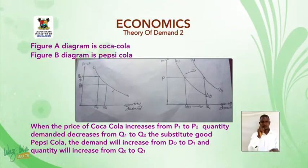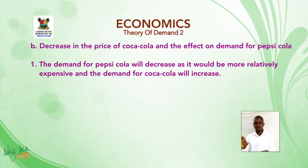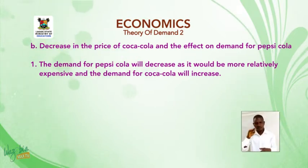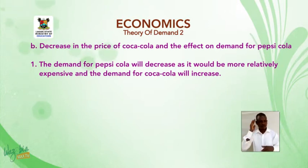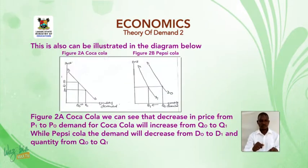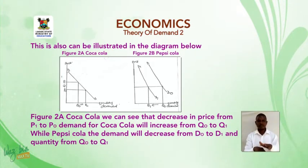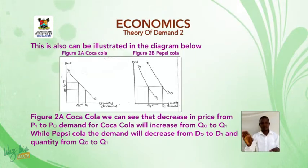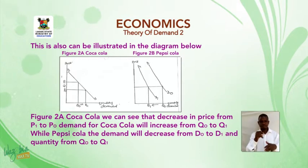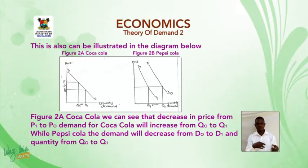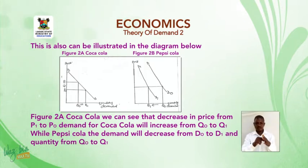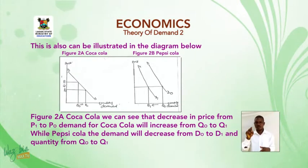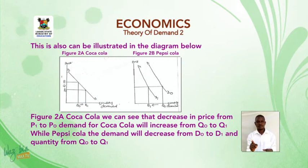Let us consider the second case: a decrease in the price of Coca-Cola and the effects on demand for Pepsi-Cola. The demand for Pepsi-Cola will decrease as it will be relatively more expensive, and the demand for Coca-Cola will increase. This can be illustrated in the diagram below. We can see that a decrease in price from P1 to P0 causes demand for Coca-Cola to increase from Q0 to Q1, while for Pepsi-Cola, the demand will decrease from D0 to D1, and quantity from Q0 to Q1.